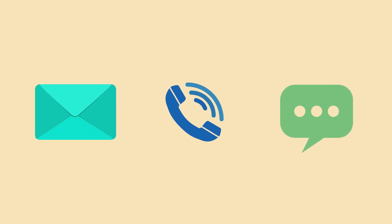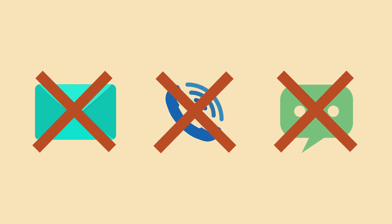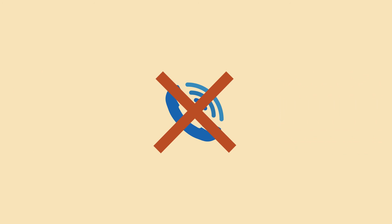What about other verification methods, like email messages, phone calls, or SMS text messages? None of these options are supported for MFA because of their inherent susceptibility to attacks. For example, email credentials can be compromised, and text messages or phone calls can be intercepted by SIM card hijacking.